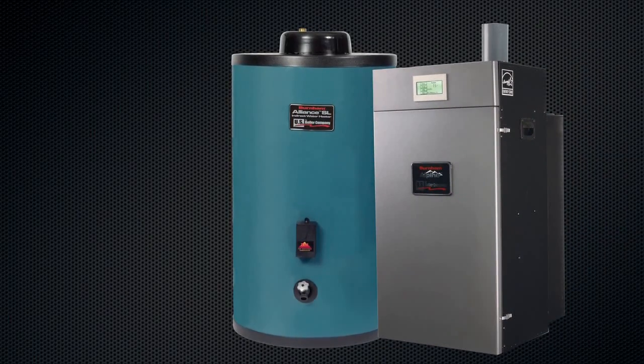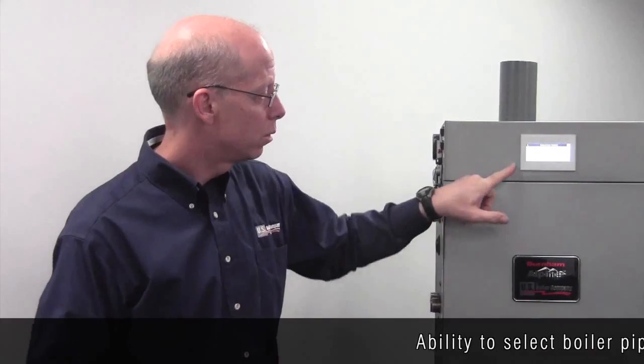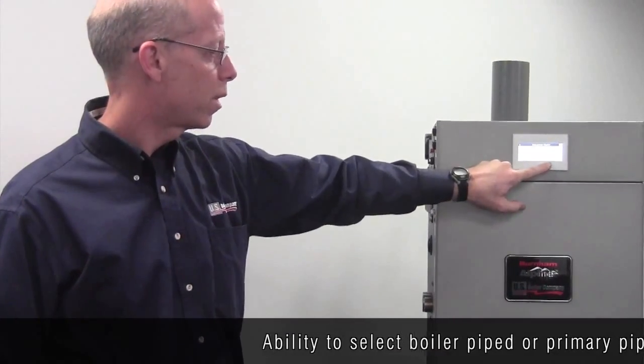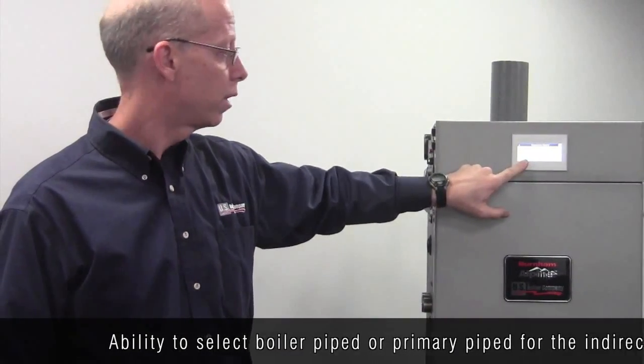Or, you can have the indirect piped to the primary header where it can be serviced by all the boilers. So, if one boiler fails, you still make hot water for showers. So, we have the ability to select boiler piped or primary piped for your location of the indirect water heater.